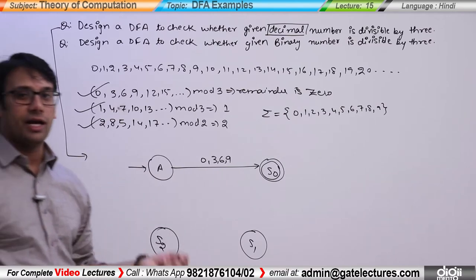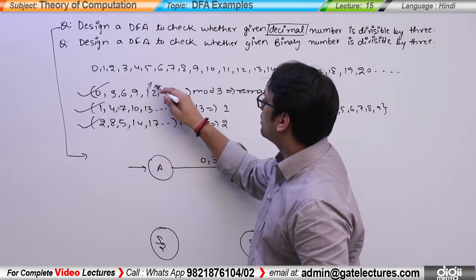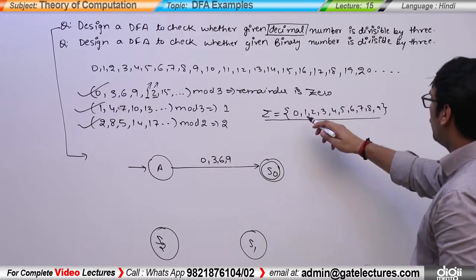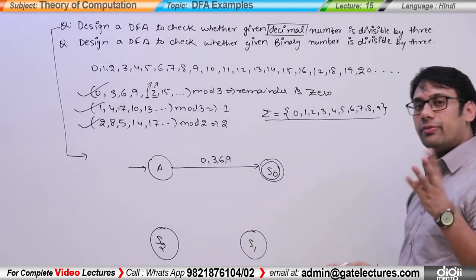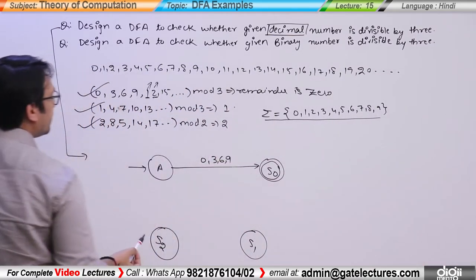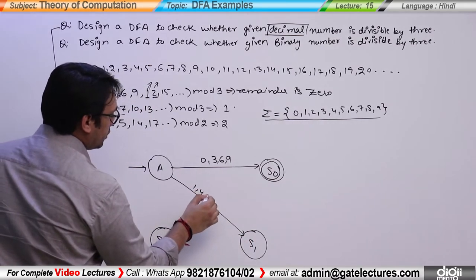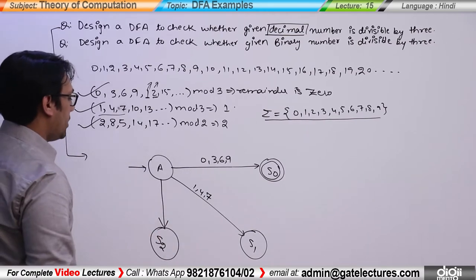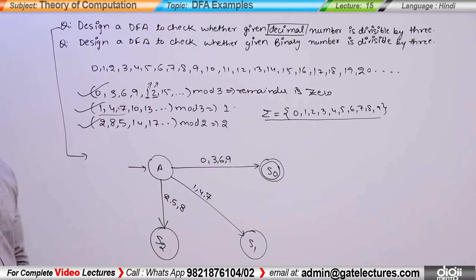For numbers like 12 and 15, we have to remember remainder 0. The decimal number 12 has symbols 1 and 2. If we have inputs 1, 4, and 7, then we get remainder 1. Similarly, if we have input 2, 5, or 8, then we get remainder 2. So basically we have 3 states corresponding to remainders 0, 1, and 2.